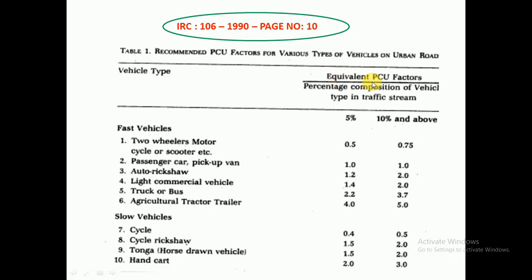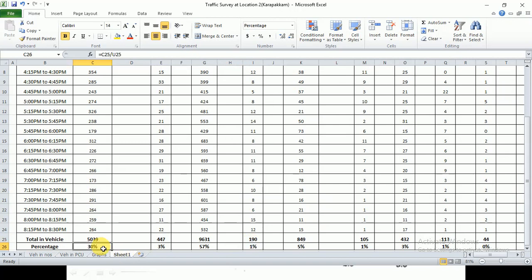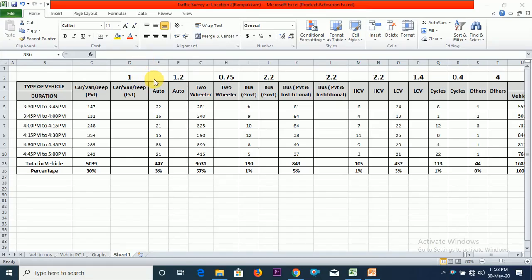The equivalent PCU factor is available in two ways: one is the 5% value, another is the 10% and above value. The choice depends on the percentage composition of that vehicle type in the traffic stream — that is, if the individual vehicle composition is less than 5%, use the 5% column value; if it is 5% and above or 10% and above, use those values respectively. Now we assign the PCU factor value for each individual vehicle based on its proportion with reference to IRC 106.